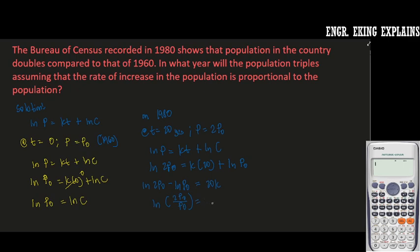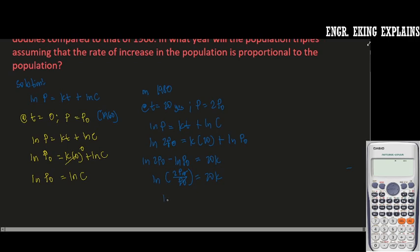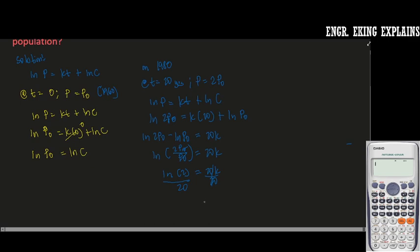This will be 20K. Cancel that one out, so we have ln 2 is equal to 20K. Now solving for K, so we just divide both sides by 20, so we could now have the value of our K